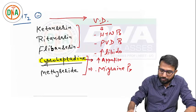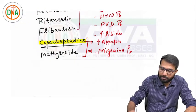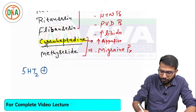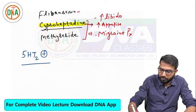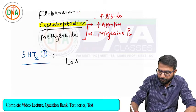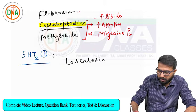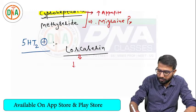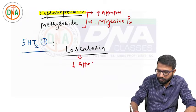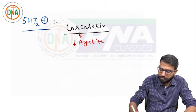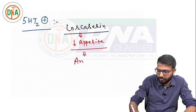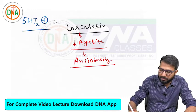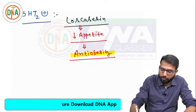Before moving on, there is one exception to the rule: we also have a 5-HT2 agonist drug, and that is lorcaserin. Since cyproheptadine (a 5-HT2 antagonist) increases appetite, lorcaserin (a 5-HT2 agonist) has the opposite effect — it suppresses appetite. Therefore, lorcaserin is used as an anti-obesity drug.